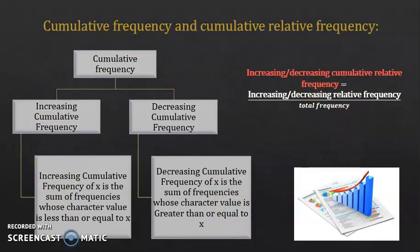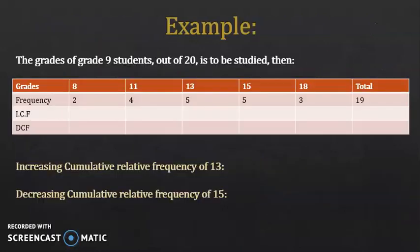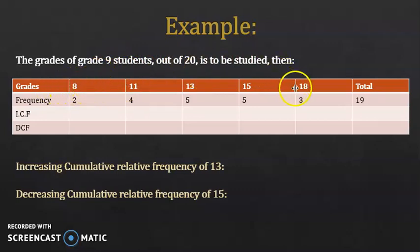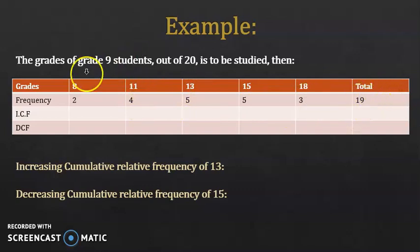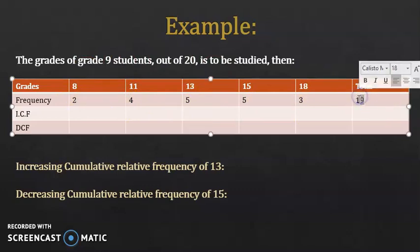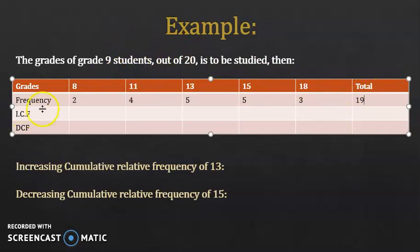Let's do an example. Suppose the grades of grade 9 students out of 20 are to be studied. The grades range between 8 and 18. The frequency of 8 is 2, the frequency of 11 is 4 — meaning 4 students got grade 11 — and so on. You get the total frequency by adding all frequencies, which gives 19, representing the total number of students in the class.